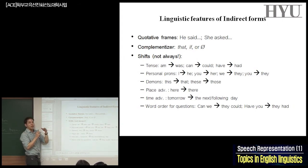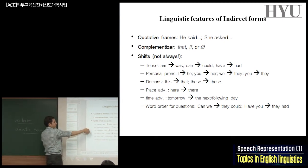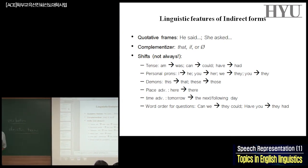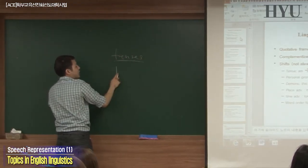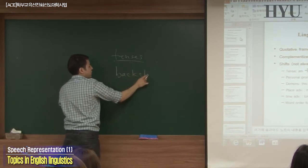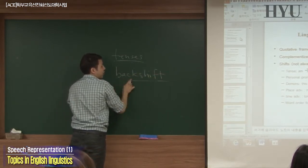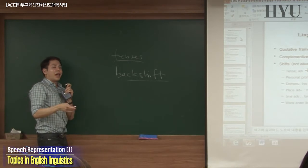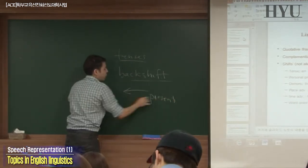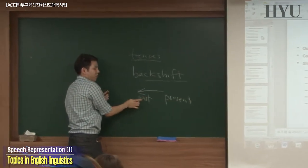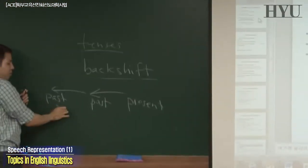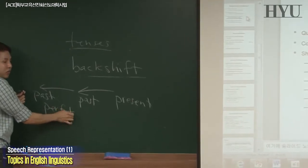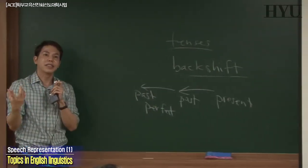Present tense shifts to past tense — we use the term 'backshifted.' Backshifted means you go back to past; if you have past tense, you go back to past perfect. Backshift one step. The reason is simple — it's not a rule you have to memorize, it's common sense. The reporting verb is what we call the anchor verb.